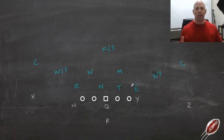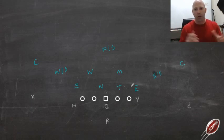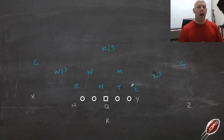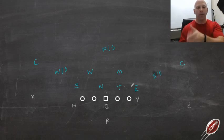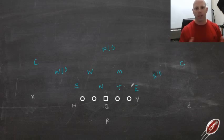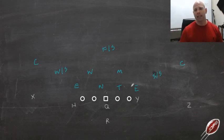Just so everybody's on the same page: 0 is head up on the center, 2 is head up on the guard, 4 is head up on the tackle, 6 is head up on the tight end. We use odd numbers for outside shades — 1, 3, 5, and 9 — same to both sides. We tag an 'I' to mean inside shade: 2I is inside shade of the guard, 4I is inside shade of the tackle, and 6I is inside shade of the tight end.